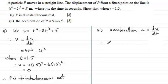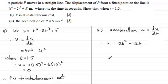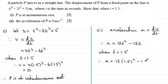Differentiating v with respect to time: differentiating 4t cubed gives 12t squared, and differentiating minus 6t squared gives minus 12t. So when t equals 1.5, a equals 12 multiplied by 1.5 squared minus 12 times 1.5. If you work this out, what comes out is 9 meters per second per second, agreeing with what we had to show.